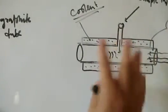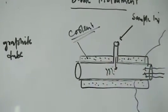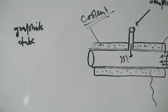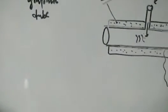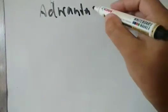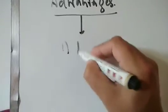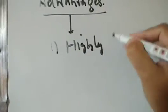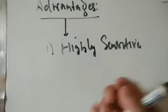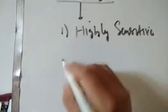These are the basic setup components used in electrothermal atomization, and these are the main points likely to be asked in examinations. Now we will move to the advantages and disadvantages of this electrothermal method. Advantage number one: it is a highly sensitive method. Its sensitivity is high, meaning it can detect even low concentrations of elements in the sample.